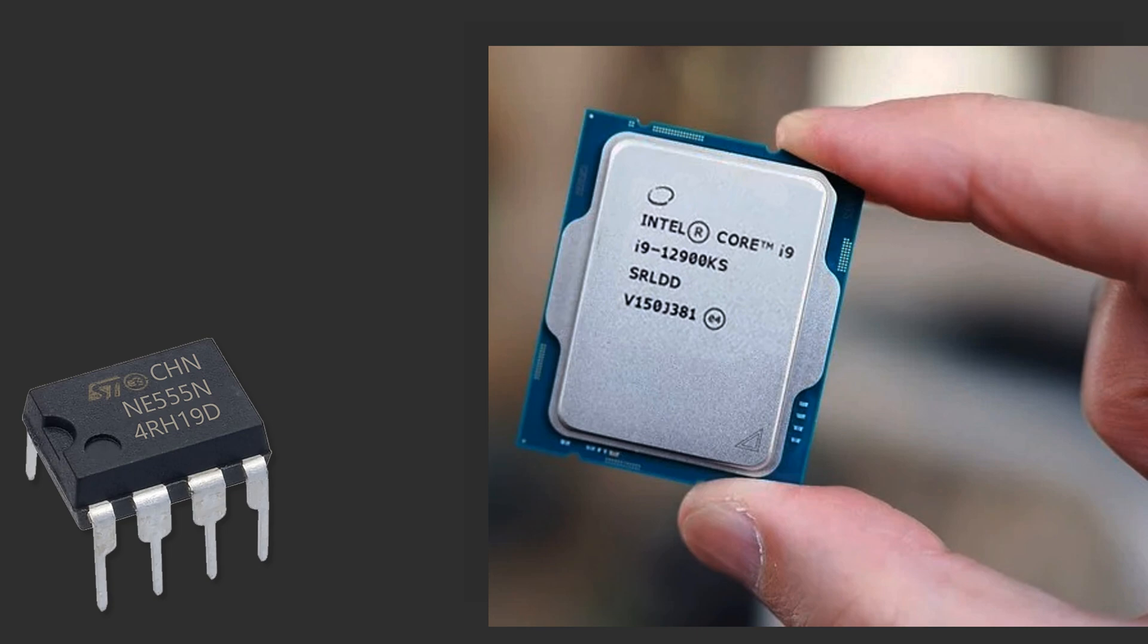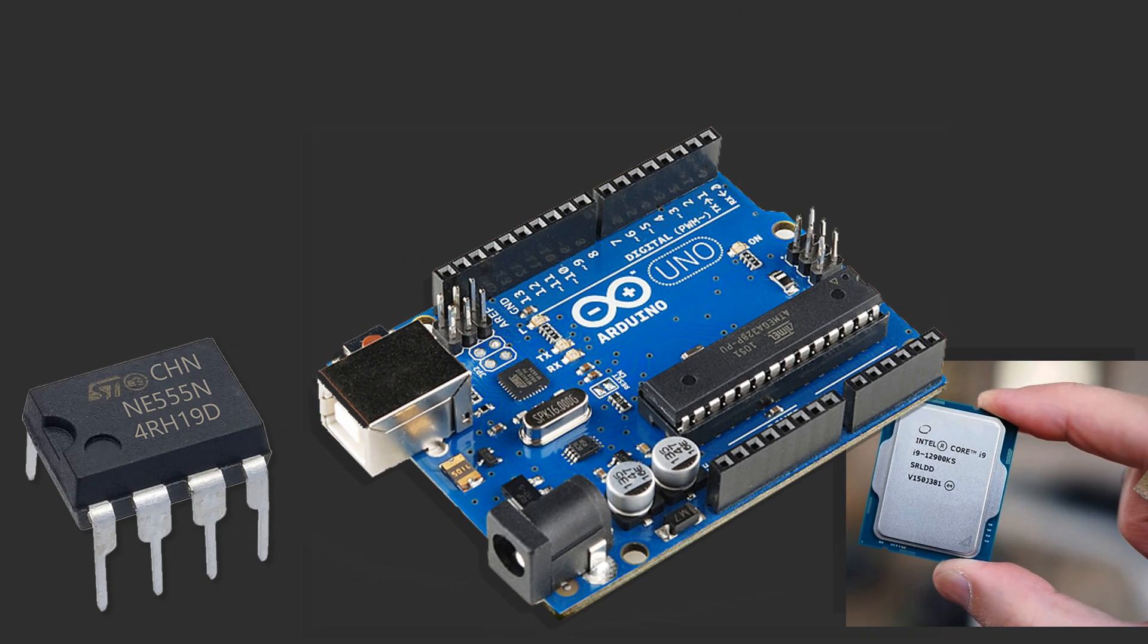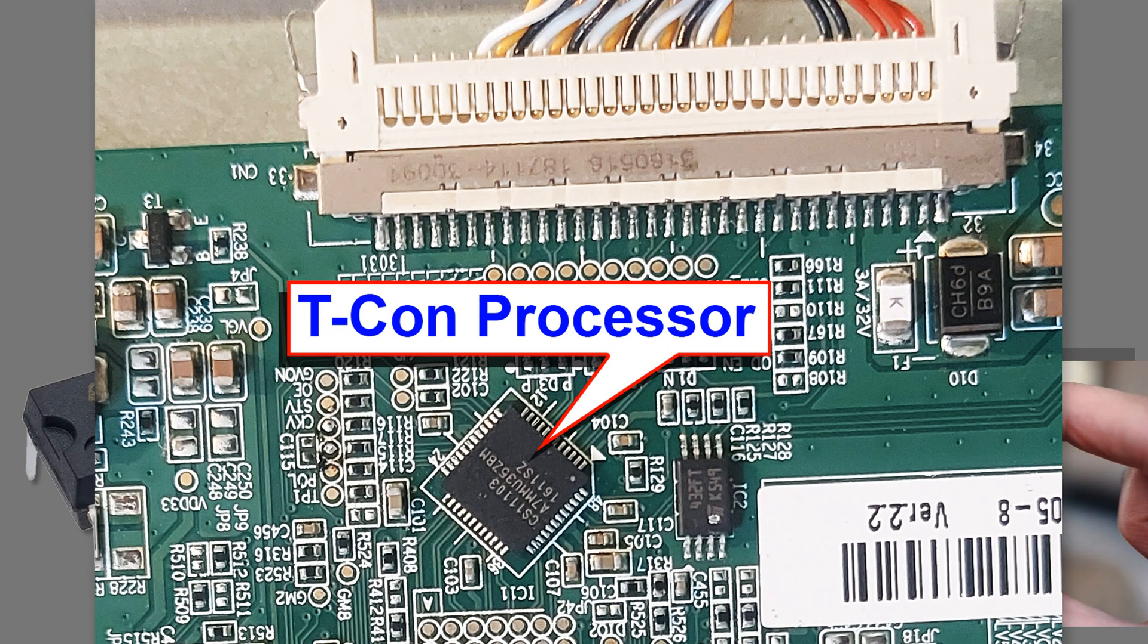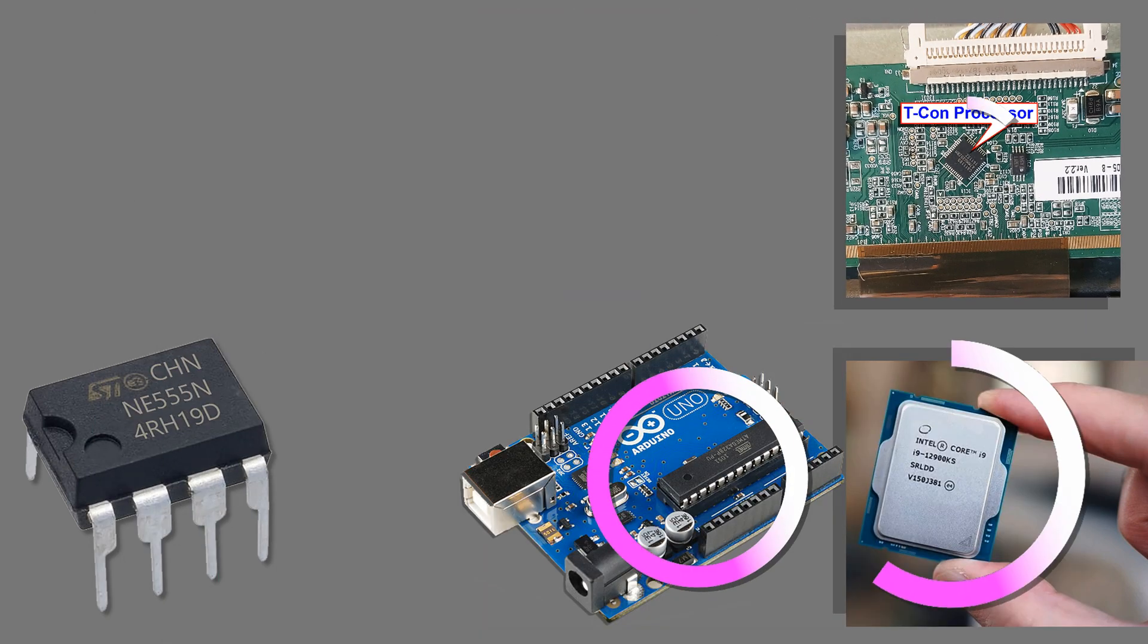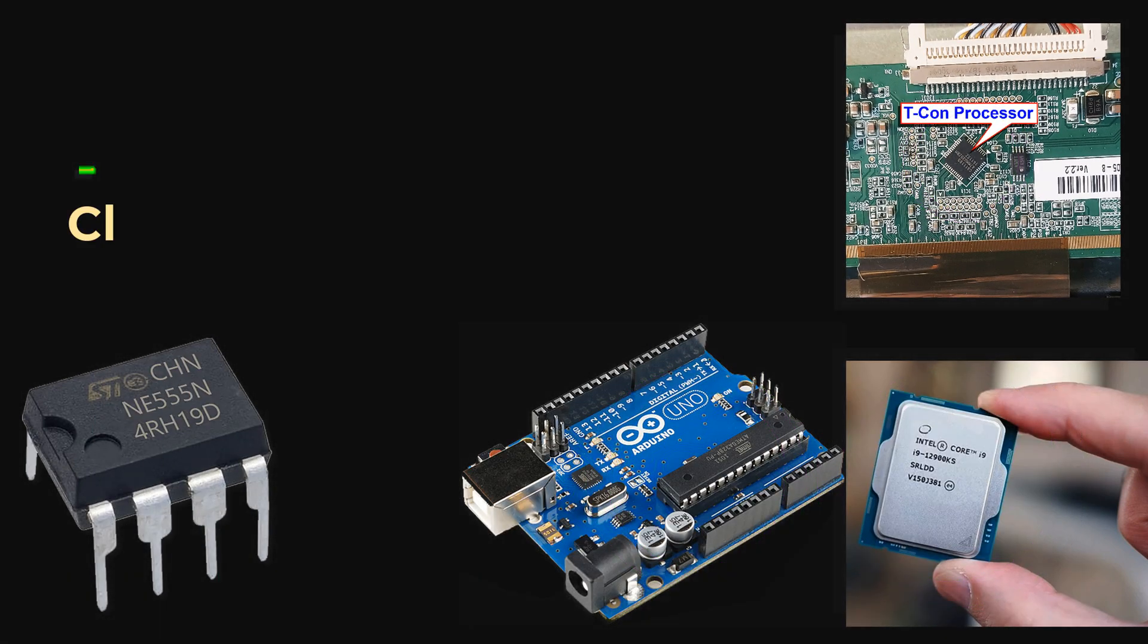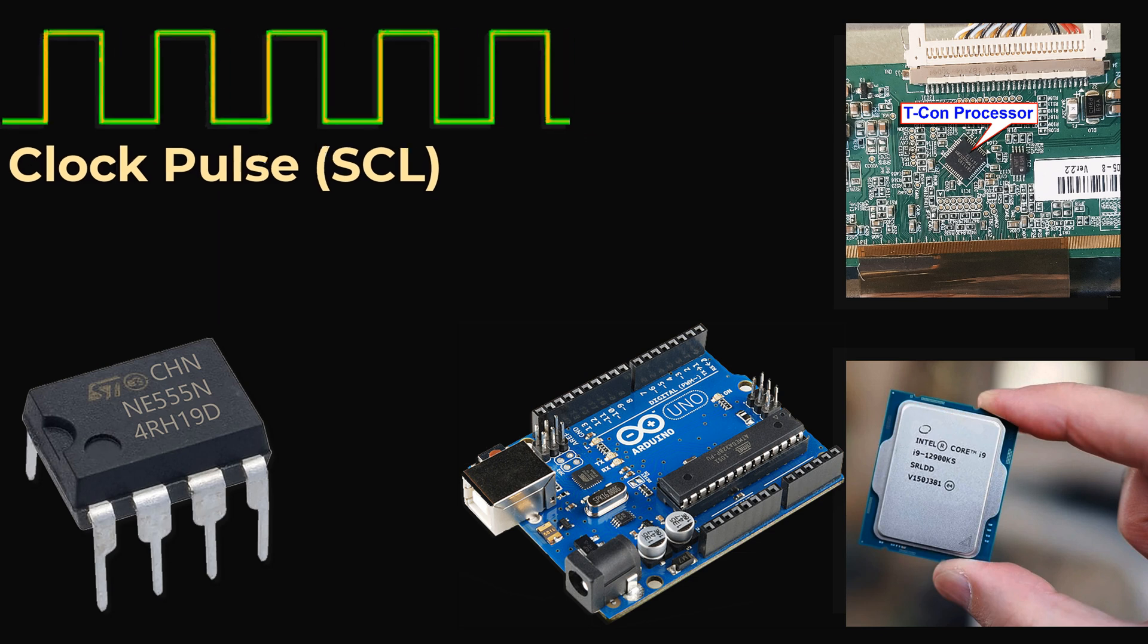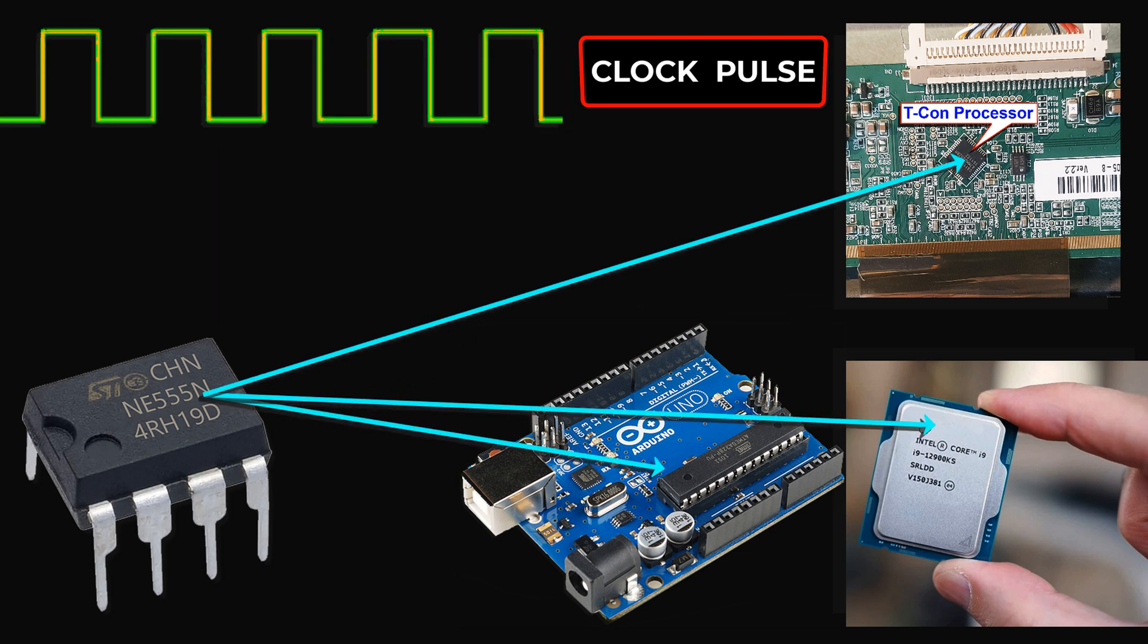Computer processor, microcontroller, displaced timing control processor. For all of these types of digital circuit, the clock pulse is generated by recalling the logic of the 555 IC.